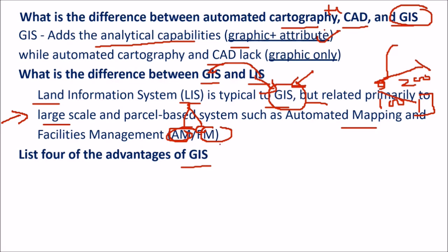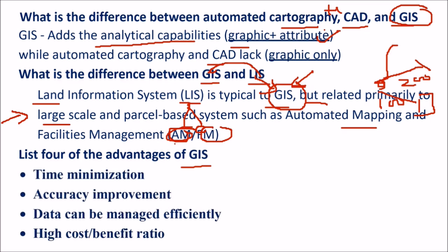List four advantages of GIS. There are various advantages. First is time minimization, accuracy improvement, data can be managed efficiently. You have already automated your system, and there is a high cost-to-benefit ratio.